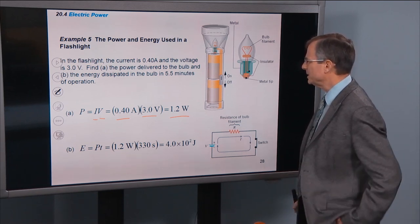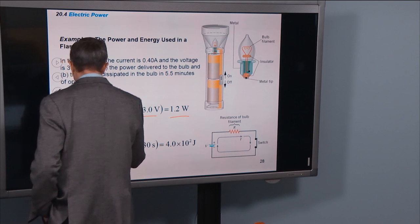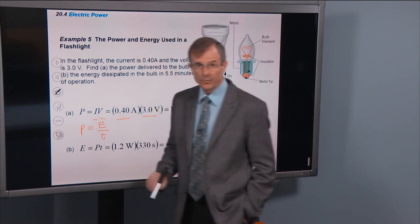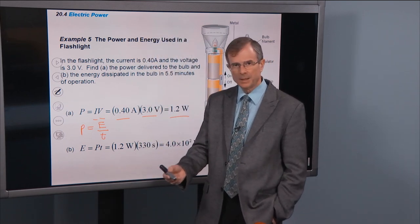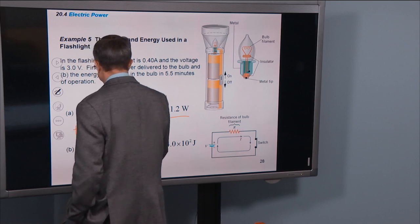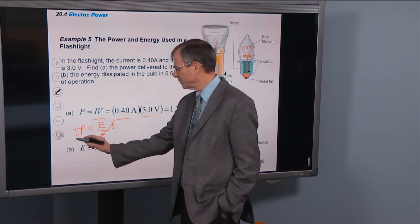And the energy dissipated, well you know that power is energy divided by time. So you can solve for the energy dissipated by multiplying both sides by the time, times cancel on the right side. And you get that E is P times T.